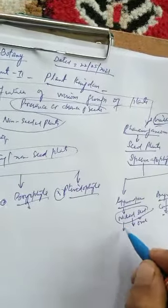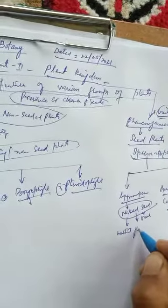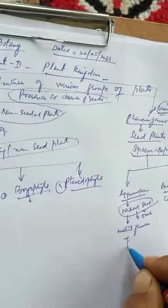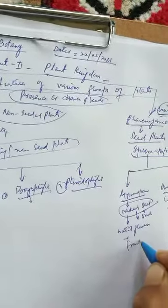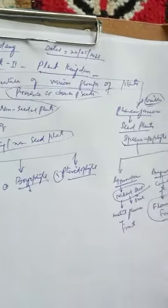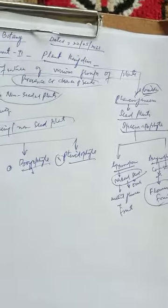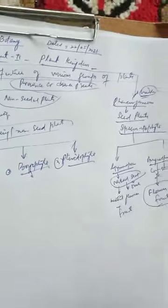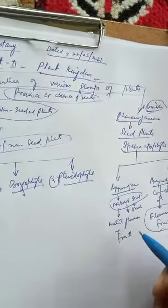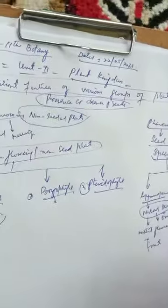Gymnosperms are without flowers and fruits, but Angiosperms contain flowers and fruits. That is why we also call Angiosperms flowering plants — the only group of plants which bear flowers is Angiosperms. The groups of plants which bear seeds are Gymnosperms and Angiosperms.